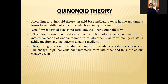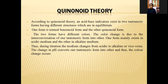This concludes Ostwald theory, which is mainly based upon the color change of the solution. Next is Quinoid theory. According to Quinoid theory, acid-base indicators exist in two different structural forms.